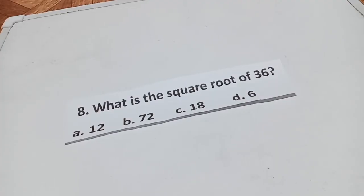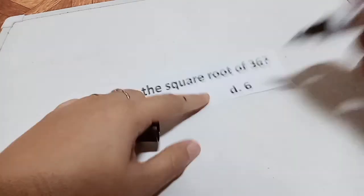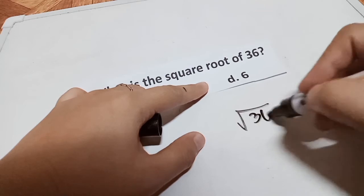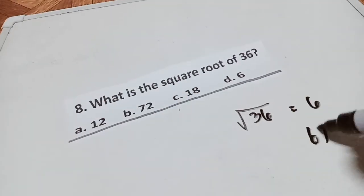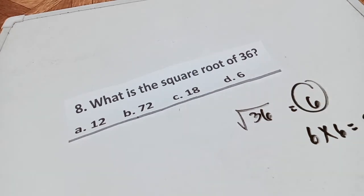What is the square root of 36, guys? This is very easy. All you have to do is to have a square root of 36, automatically 6. Because that is already 6 times 6 is 36. The best answer is letter D.